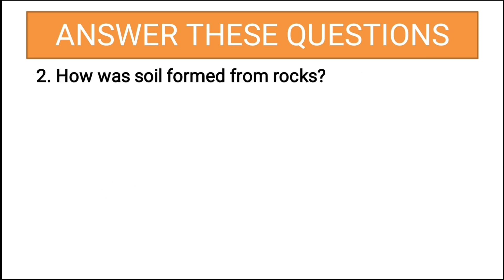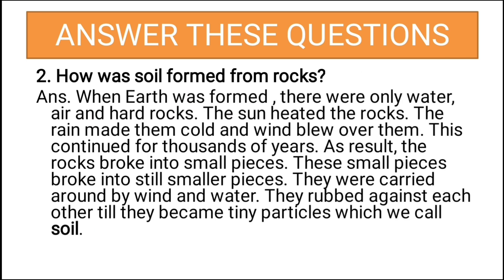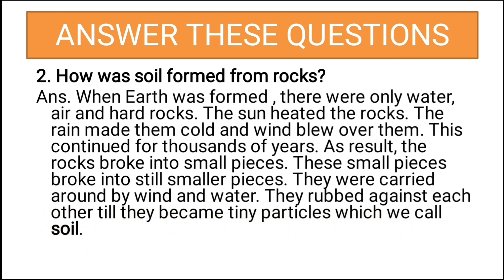Second question: how was soil formed from rocks? When Earth was formed, there were only water, air, and hard rocks. The sun heated the rocks, rain made them cold, and wind blew over them. This continued for thousands of years. As a result, the rocks broke into small pieces, then into still smaller pieces. They were carried around by wind and water, rubbing against each other till they became tiny particles which we call soil.